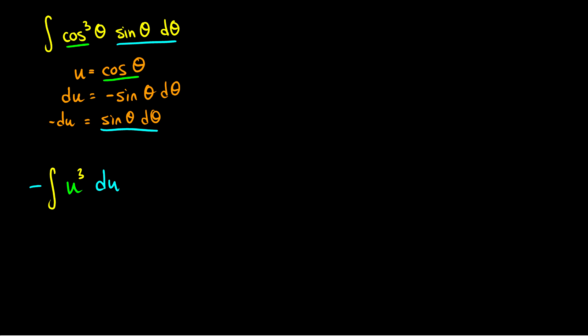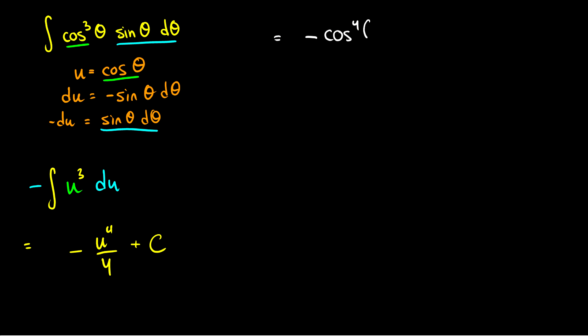This is now straightforward. The antiderivative of u³ is u^4/4, so we get −u^4/4 + C. Substituting back in u = cos(θ), we get −cos⁴(θ)/4 + C. If we wanted to verify, we could take the derivative, but the answer is correct.